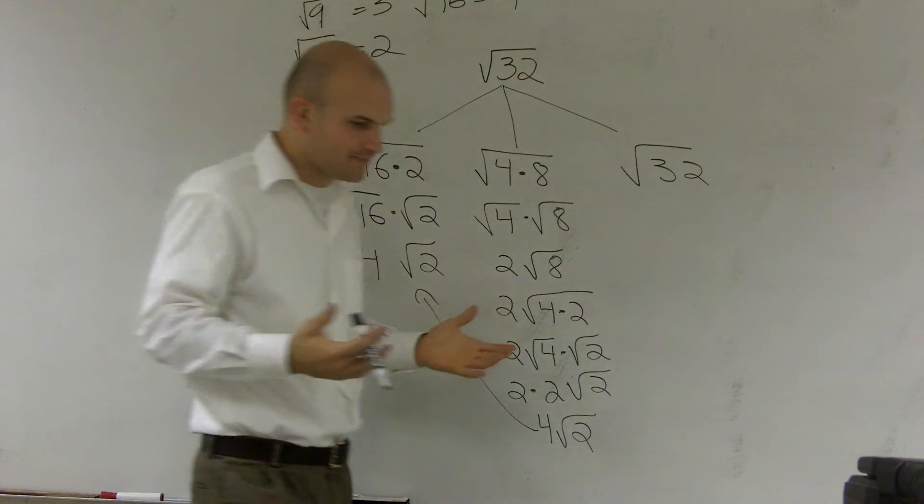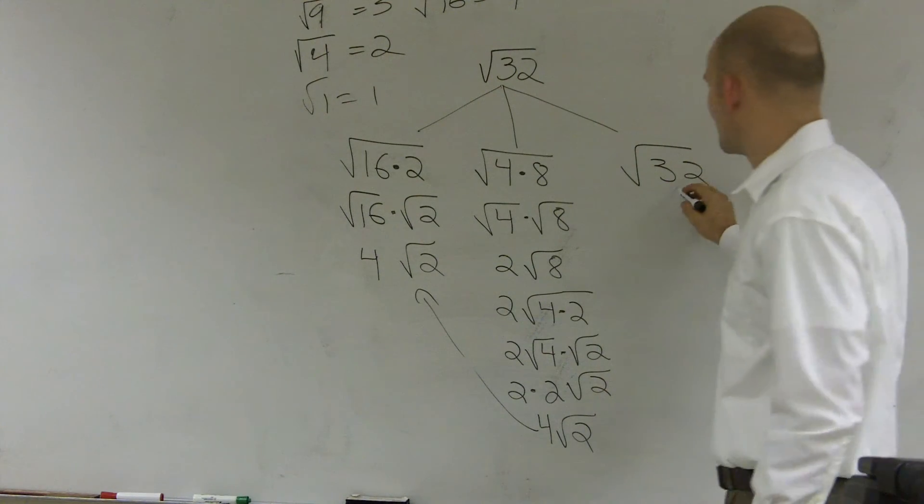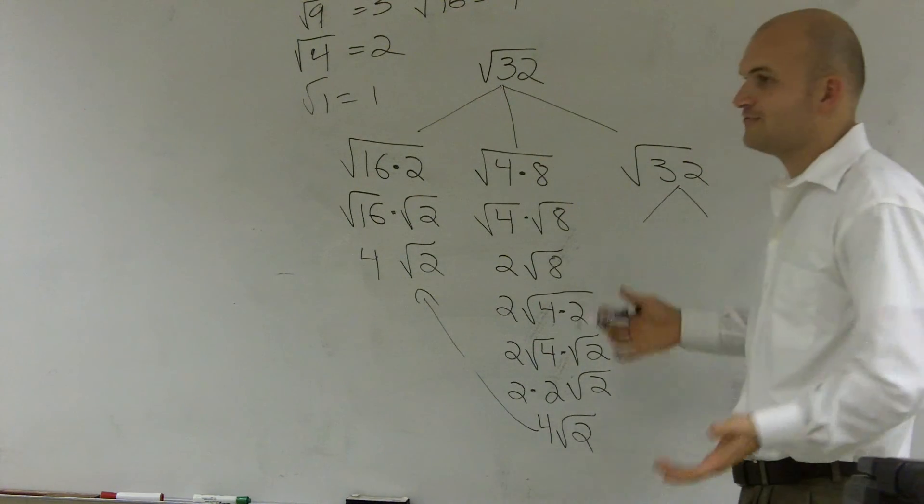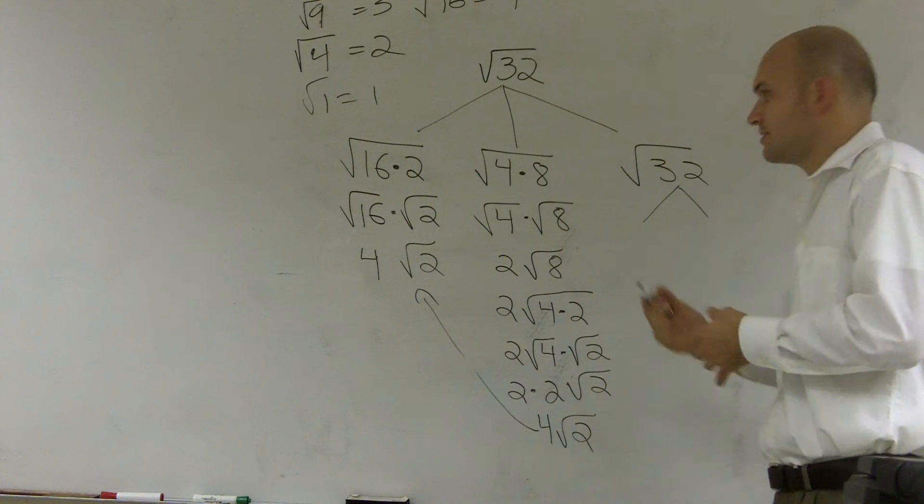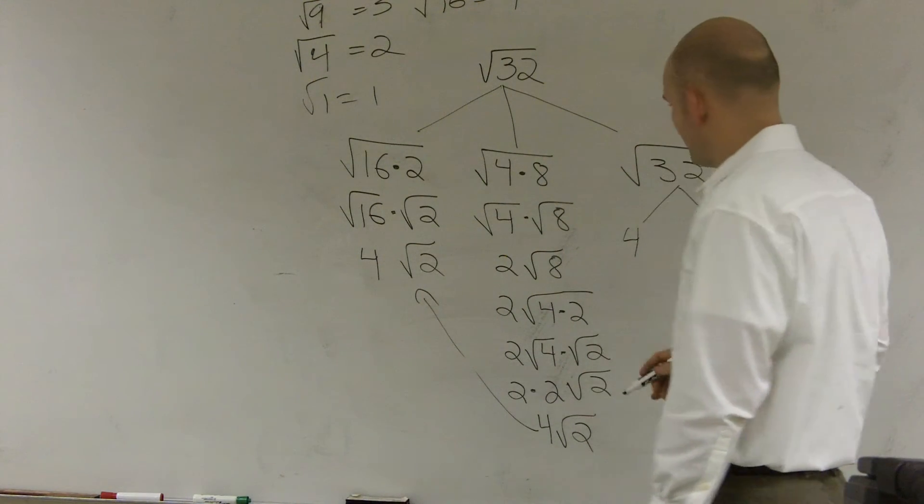Now, the other way a lot of times people like to do this is what we call the factoring tree method. So you can factor this. And you just think of, well, what two factors multiplied to give you 32? And you can do this in multiple different ways. Let's just pick our 4 and our 8. Then you factor it again.